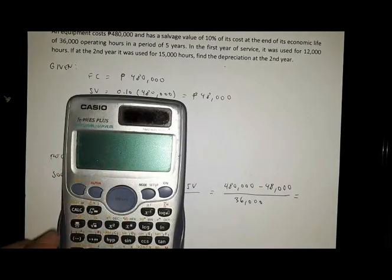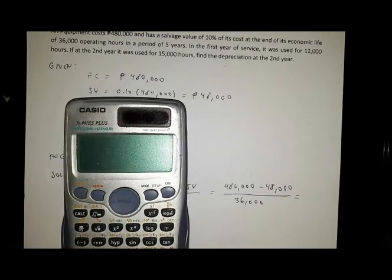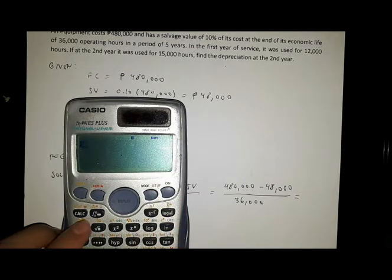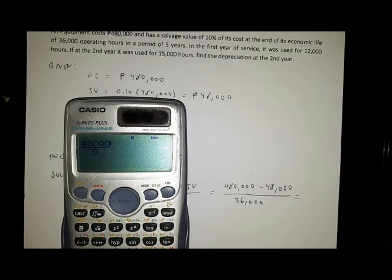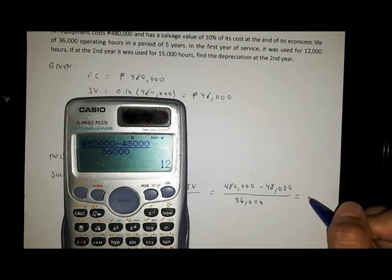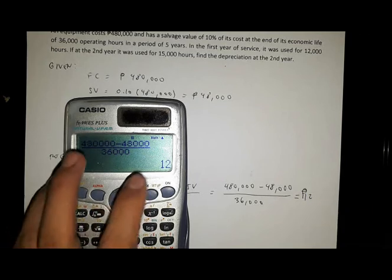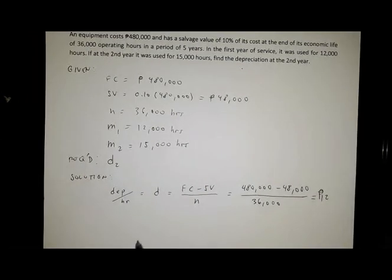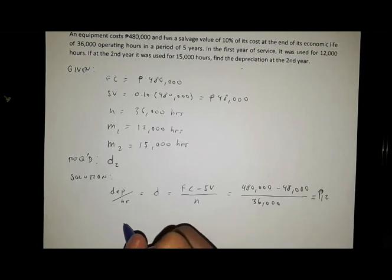So that is equal to 480,000 minus 48,000 divided by 36,000. 480,000 minus 48,000 over 36,000 equals 12 pesos.